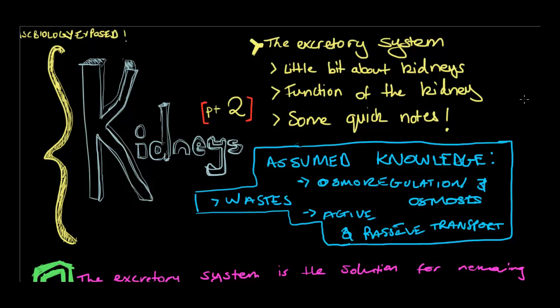Welcome to Kidneys Part 2. Today I'm going to be talking about the excretory system, a little bit about the kidneys, the function of the kidneys, and some quick notes. The main aim is to give you a more detailed overview of the kidneys to help you with topic number 3 in maintaining a balance. There is some assumed knowledge: osmoregulation and osmosis, as well as wastes and active and passive transport.